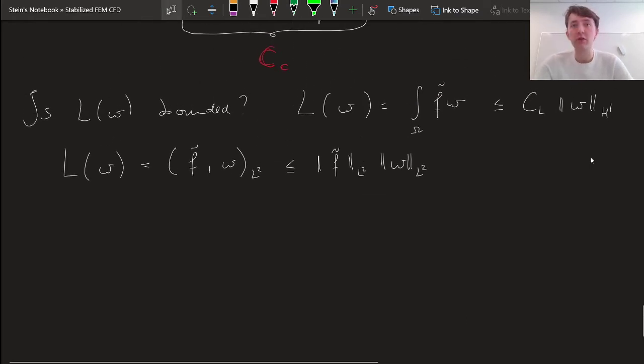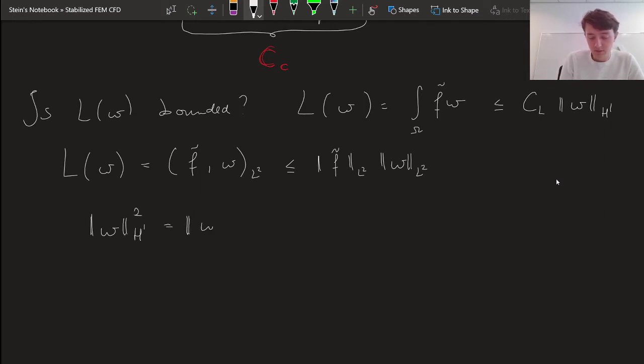Now of course we want to have something that is in the H1 norm, and that's kind of a similar problem as we ran into before, that we obtain an expression involving norms measured in a certain sense, but we need actually a norm in the H1 sense. Now for boundedness that is actually very easy to handle, and that is because by definition of the H1 norm, which I'll just write down here again for completeness, this was the definition of our H1 norm.